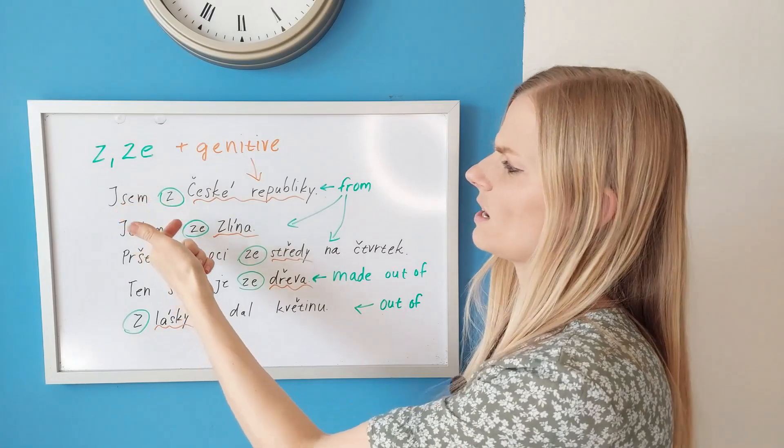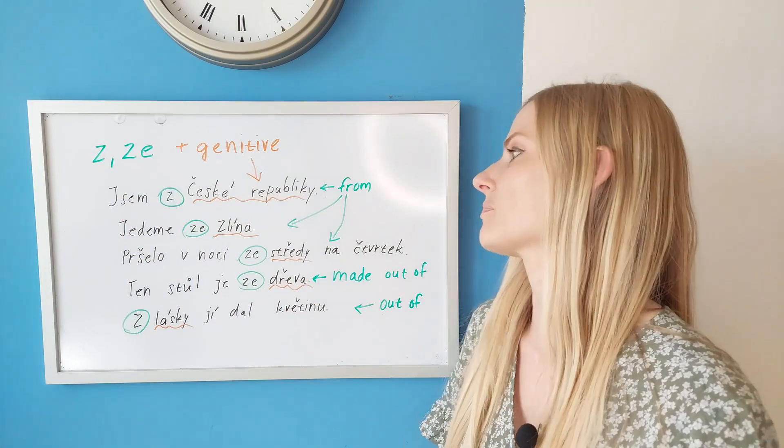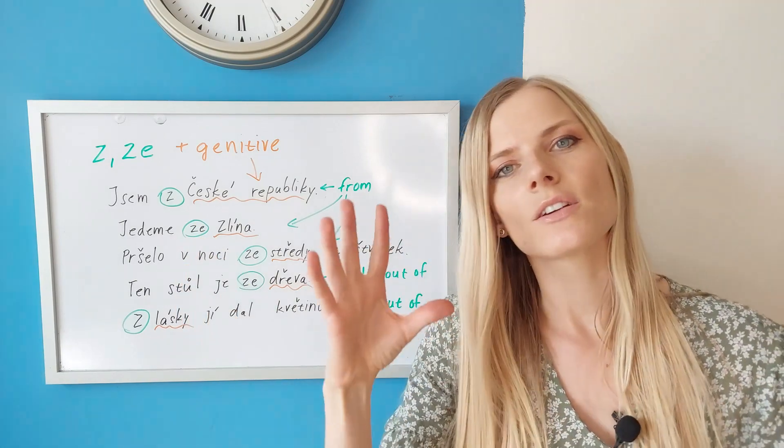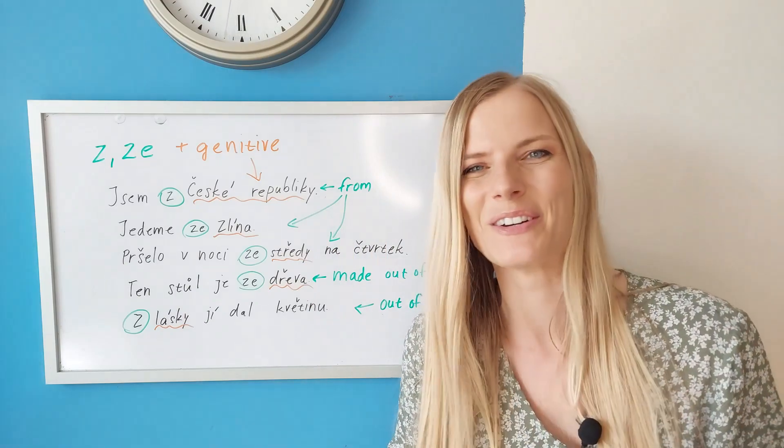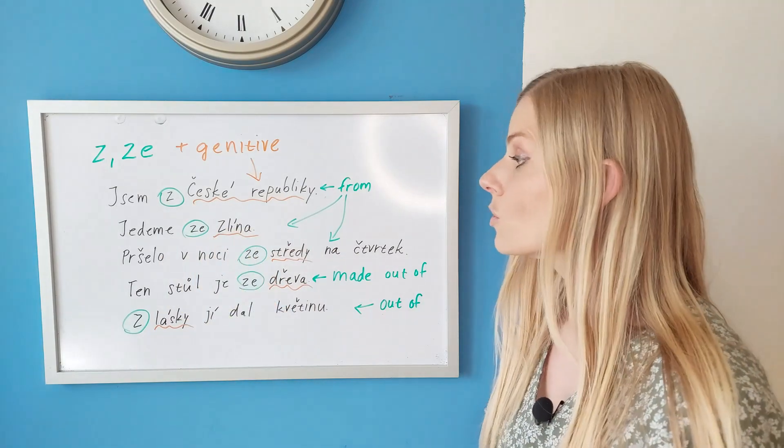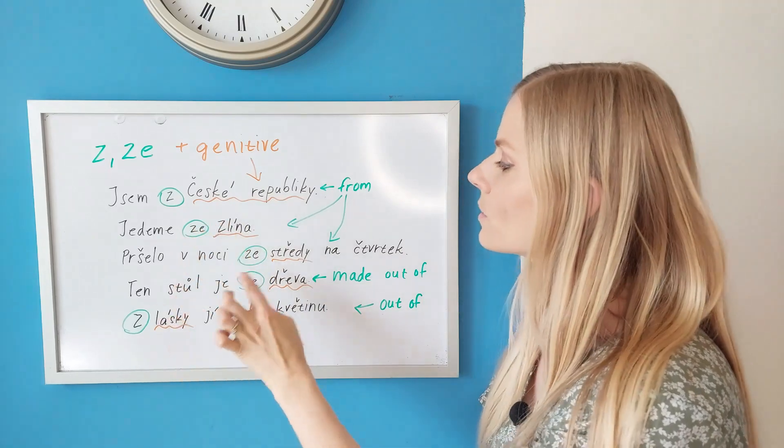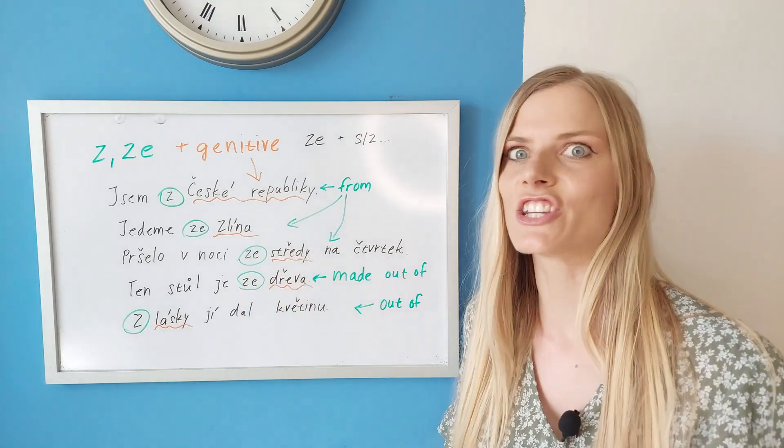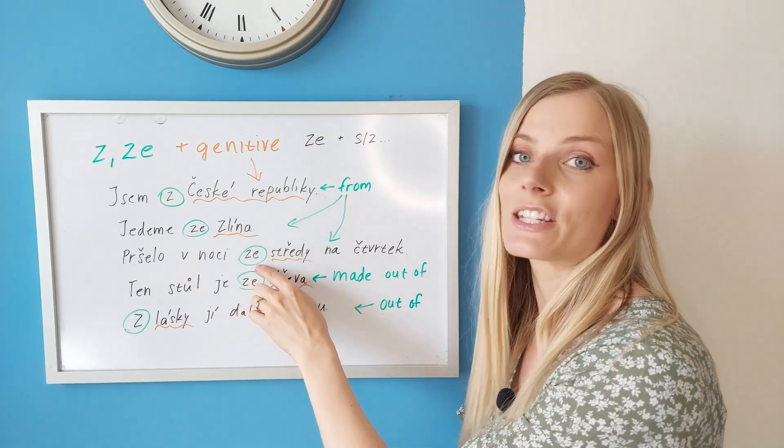You can see that we used z and ze. Now I'm going to explain where we use which form. We use this form, the longer form, for a better pronunciation. We add the E there so that it connects better and there are not so many consonants. The following word starts with a Z. Ze Zlína. So we use ze if the following word starts with Z or S. That's the first rule.